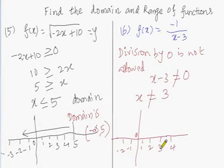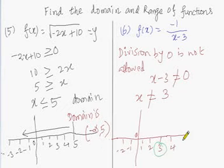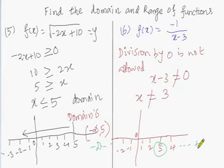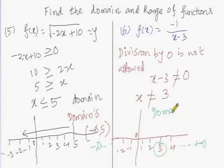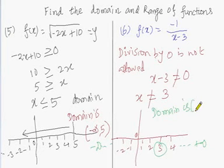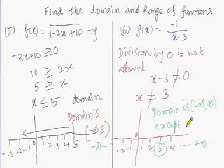What value is there? x should not be equal to 3. So the domain goes from minus infinity to plus infinity, but excluding 3. The domain is minus infinity to plus infinity, except 3. This is the domain.